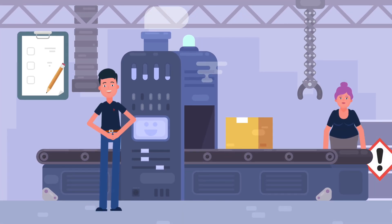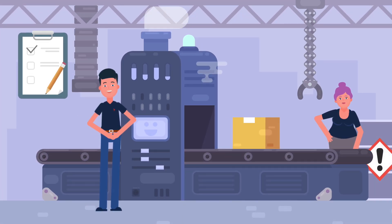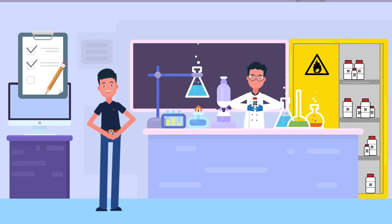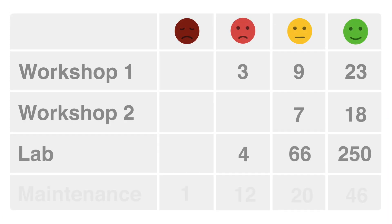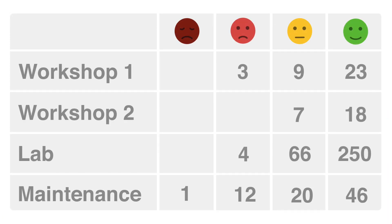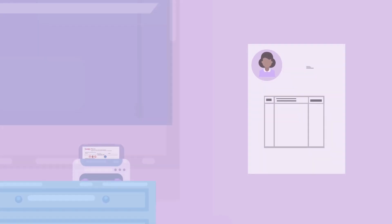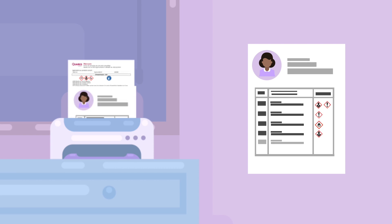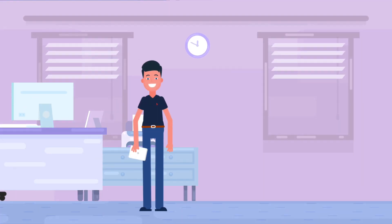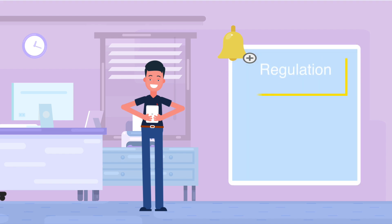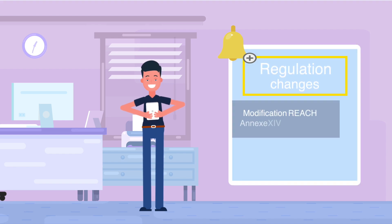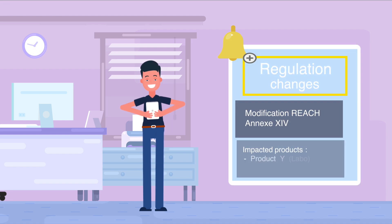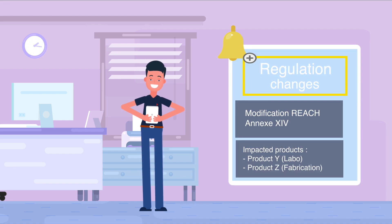Now, he can identify the use of chemicals at each workstation. Quark Safety allows him to easily identify risk situations. It can even produce safety sheets and identify individual exposures. It will automatically alert John as soon as a regulation changes that impacts a substance used in the Protipac production process. Better safe than sorry.